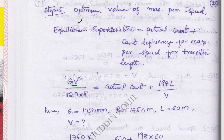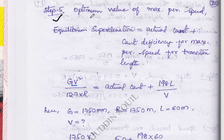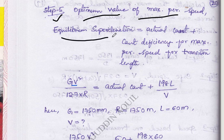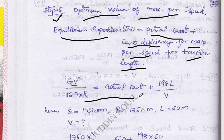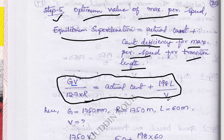Step 5 is the main body of your solution and is very important. In this step we calculate the optimum value of maximum permissible speed. The formula for maximum permissible speed based on transition length is: GV²/127R = actual cant + 198L/V. Substituting all values, we solve for V.